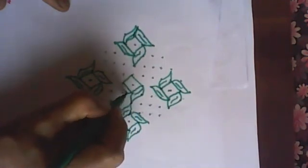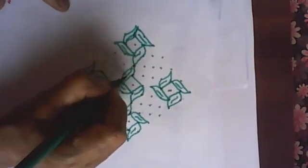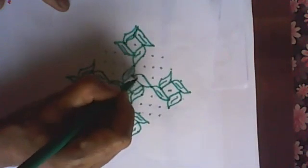Then we draw a diamond similar to what we had done earlier, but in the middle, and we again draw the leaves.